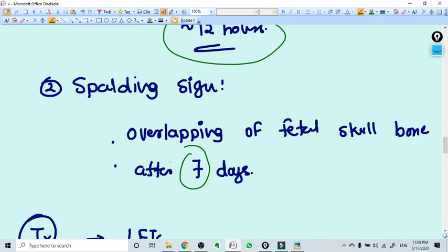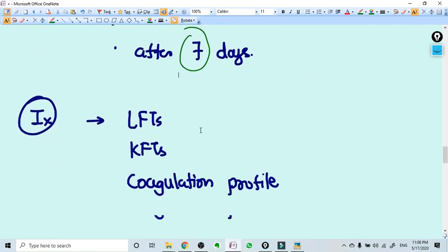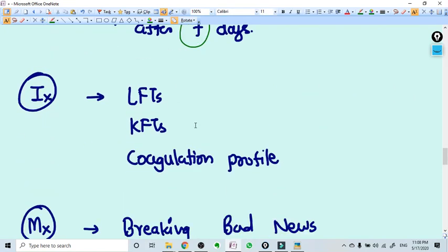So whenever you see a Spalding sign, that means you are seeing a late IUD, means the time is already gone, at least seven days. So you need to act very cautiously.